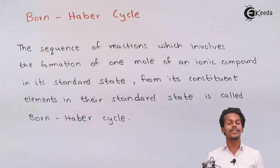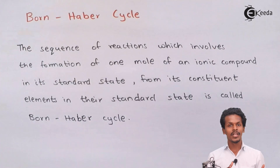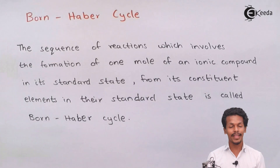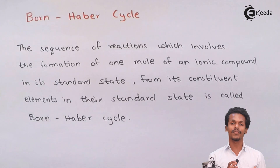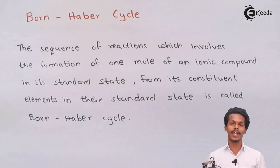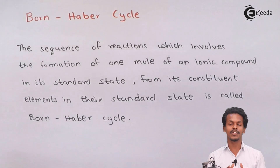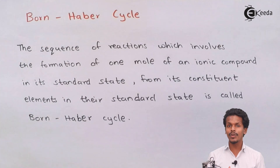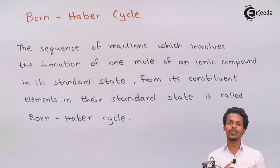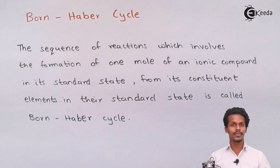A crystal, or ionic compound, is formed by constituent particles like atoms, molecules, or ions. During this formation, both the compound being formed and the constituent elements — whether atoms, ions, or molecules — should all be in their standard state. This makes it much easier to calculate the lattice energy of a particular ionic solid. To understand this better, let us go through an example.